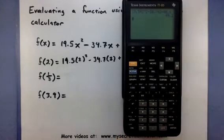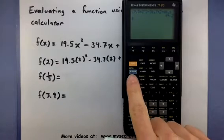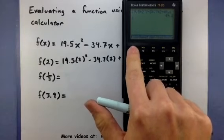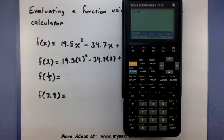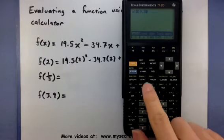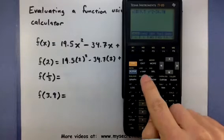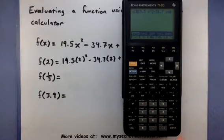So let's go ahead and get this function stored into our calculator. To do that, press your graph button. This will bring up a lot of different options. You want f1, the y equals. And here's where we actually type in our function. So, 19.5x carat 2 minus 34.7x plus 40.6. Enter. All right. So this basically gets it all stored in the calculator.